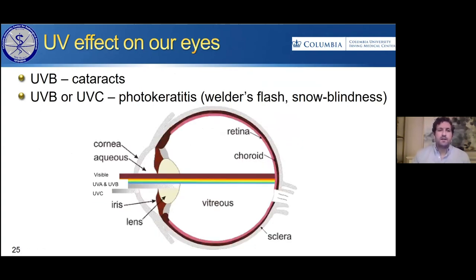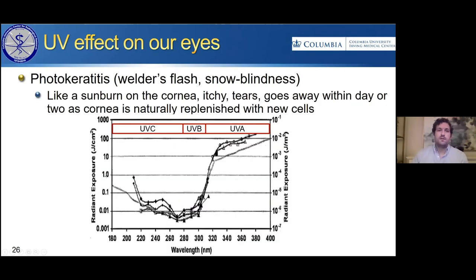UV also affects our eyes. Looking at a cross-section of the eye, the cornea is on the left, light passes through the lens, and lands on the retina. Visible light makes it through with no problem. UVA and UVB make it through the cornea but are absorbed largely in the lens, which is why UVB can lead to cataract formation. UVC will be entirely absorbed in the cornea. Both UVB and UVC can lead to photokeratitis — also known as welder's flash or snow blindness — which is like a sunburn on your cornea. It causes itching and tearing but goes away within a day or two as the cornea is replenished with new cells. The graph shows that the smallest dose needed to cause photokeratitis — and thus the most danger — is between 240 and 300 nanometers.